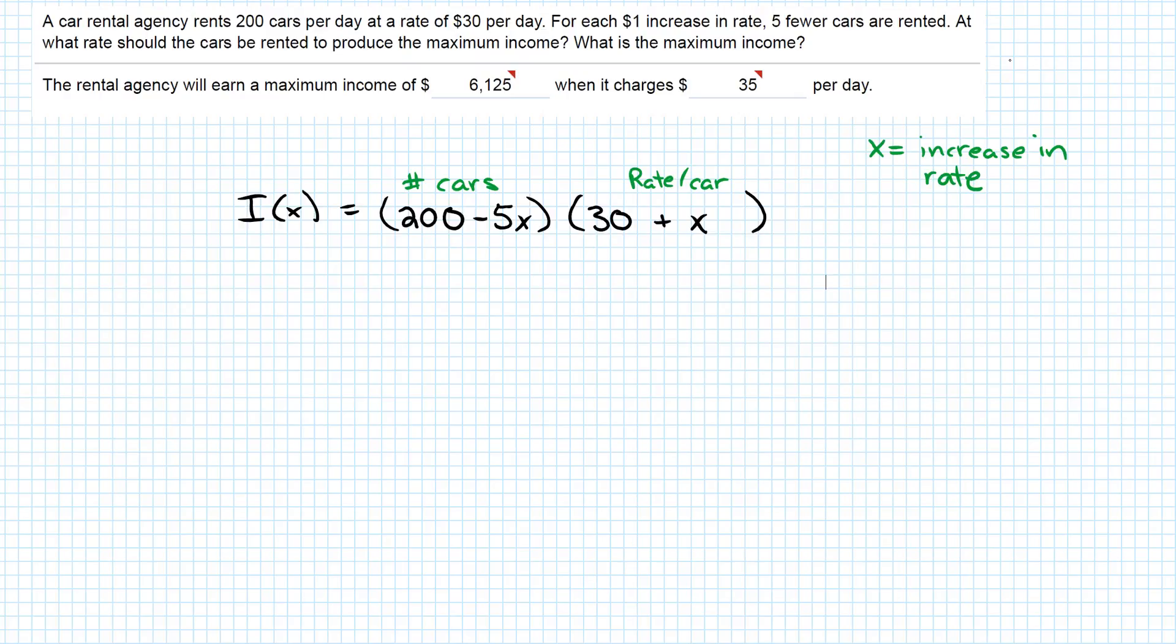I've got a choice about how I want to handle this function. I know I need to take a derivative. I can use the product rule to multiply these two functions together and take the derivative, or I could just FOIL it and use the power rule. I'm going to do that because it tends to be simpler.